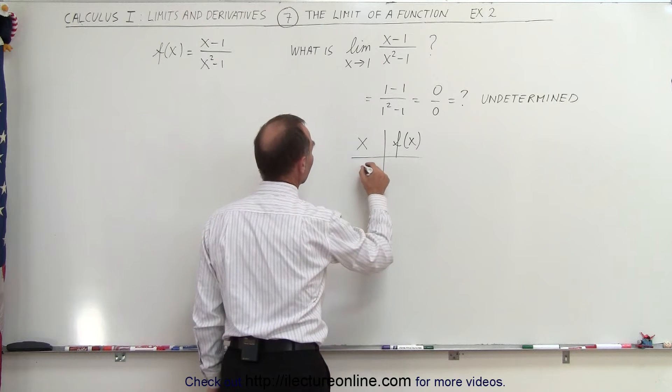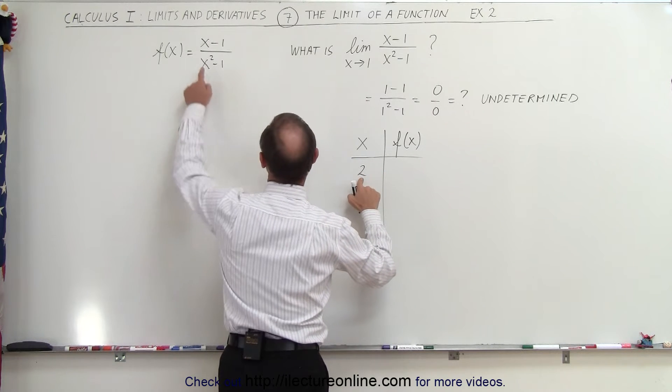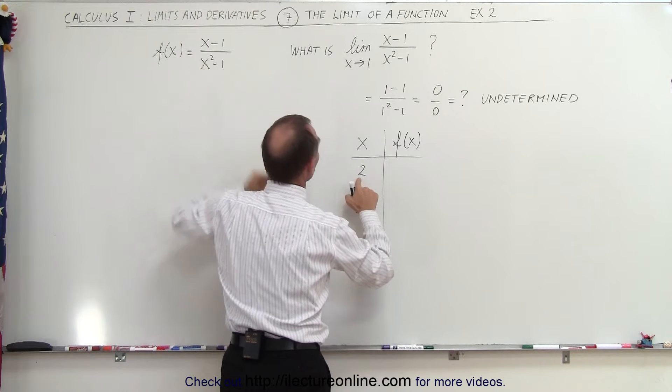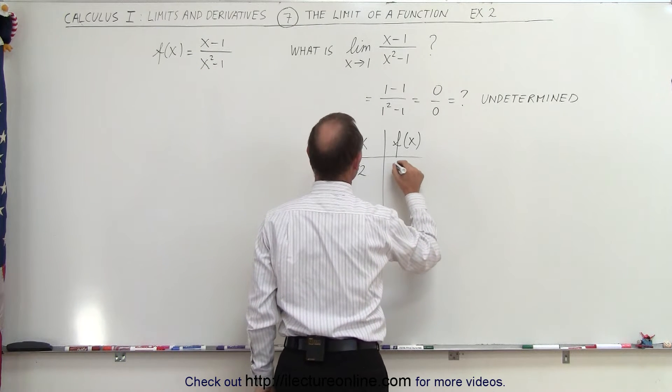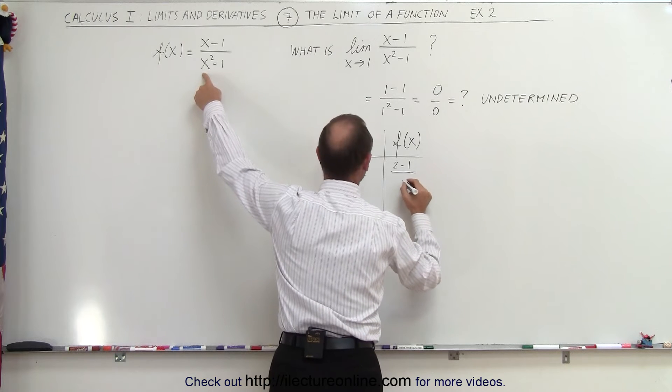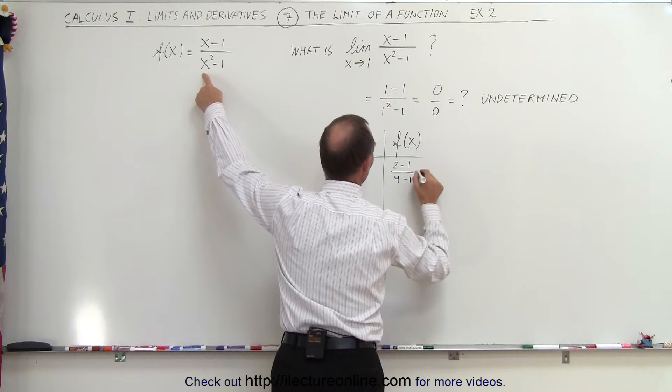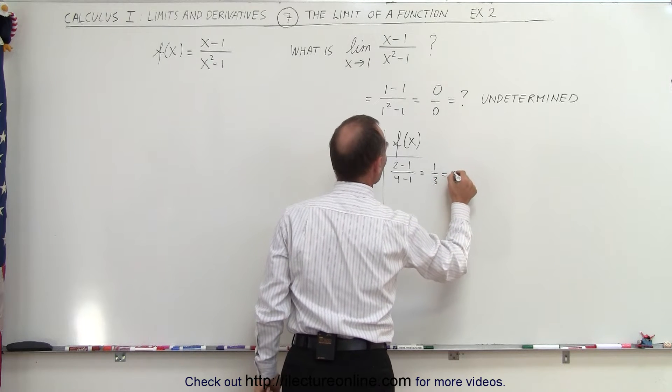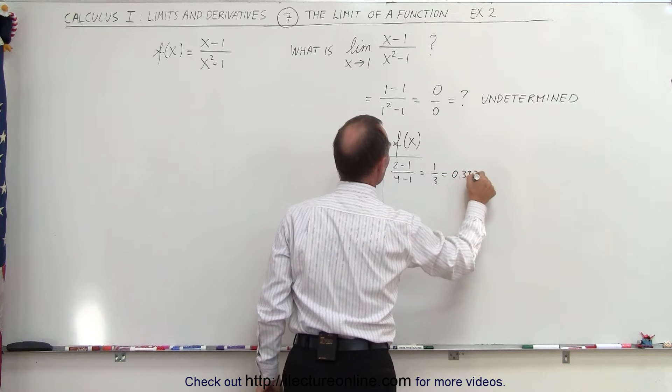So let's say we start with the value for x equals 2. When x is equal to 2, we get 2 minus 1 divided by 2 squared minus 1. So that would be, f of x would be 2 minus 1 divided by 2 squared minus 1, which is 4 minus 1, which is 1 divided by 3, which is equal to 0.333.